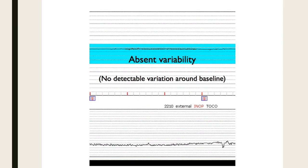Here are some examples of everything we've talked about so far. Absent variability is truly zero beats per minute above or below the baseline — the line is completely flat, staying at 135 all the way through. We really need to act on that: we can reposition mom, give her a little fluid bolus, and try to wake the baby up to get better variability.